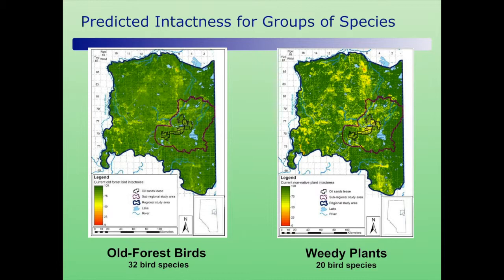Here are some examples from 32 old-forest bird species — we did the same analysis for each of them. The map on the left is the average intactness across those 32 species, and the one on the right is the average intactness for weedy species in the same area. Two things to notice: first, by creating a comparable metric across species you can sum up across groups; second, the answers aren't the same for each species or group — there are some similarities between the maps, but also a bunch of differences.